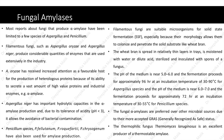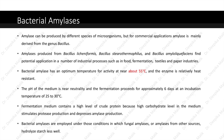Filamentous fungi are suitable microorganisms for solid state fermentation especially because their morphology allows them to colonize and penetrate solid substrates like wheat bran. The wheat bran is spread in relatively thin layers in trays, moistened with water or dilute acid, sterilized and inoculated with spores of a fungus. The pH of the medium is near 5 to 6 and fermentation proceeds for approximately 96 hours at an incubation temperature of 30 to 90 degrees Celsius for Aspergillus species. For Penicillium species, the pH is near 6 to 7 and fermentation proceeds for approximately 72 hours at 30 to 55 degrees Celsius. Fungal alpha amylases are preferred due to their generally recognized as safe status.